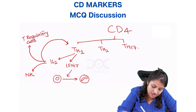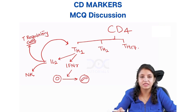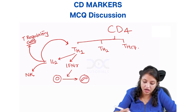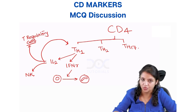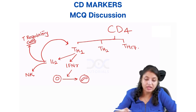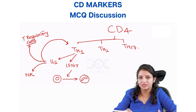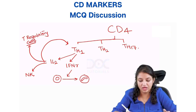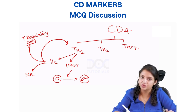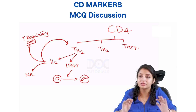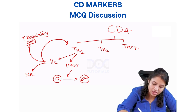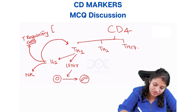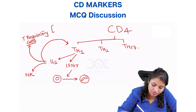So what are these T regulatory cells? They are a subset of CD4 cells only, but they suppress the immunity. So they are the ones which are going to suppress immunity. They are CD4 cells only.